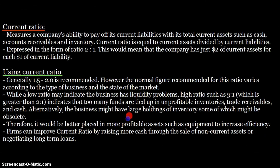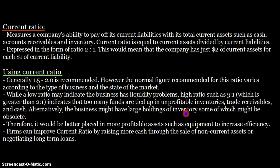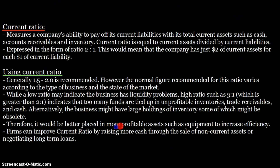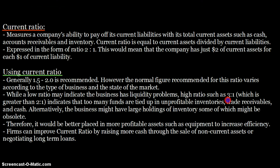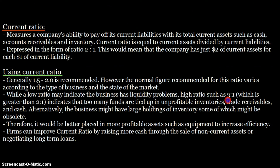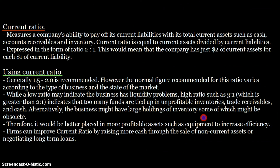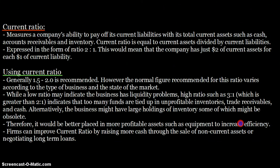A high current ratio could also mean the business holds large amounts of obsolete inventory that cannot be converted into cash easily. It would be better to place those funds in more profitable assets such as equipment to increase efficiency. Instead of having funds tied up in inventories, trade receivables, and cash, the business could purchase equipment to increase non-current assets, improve operational efficiency, and likely increase sales.